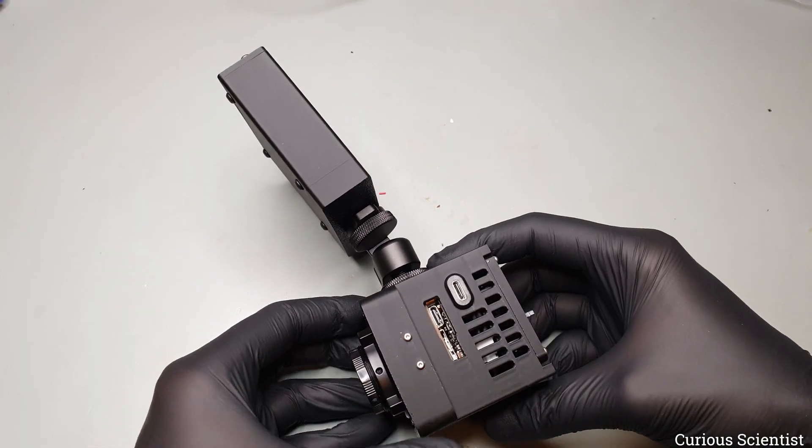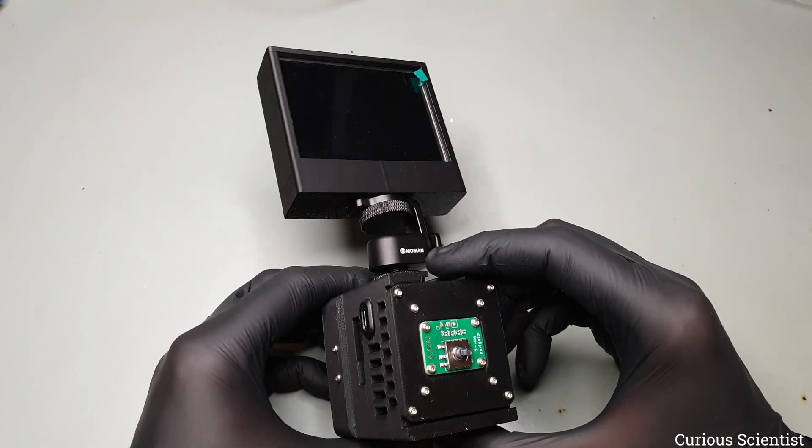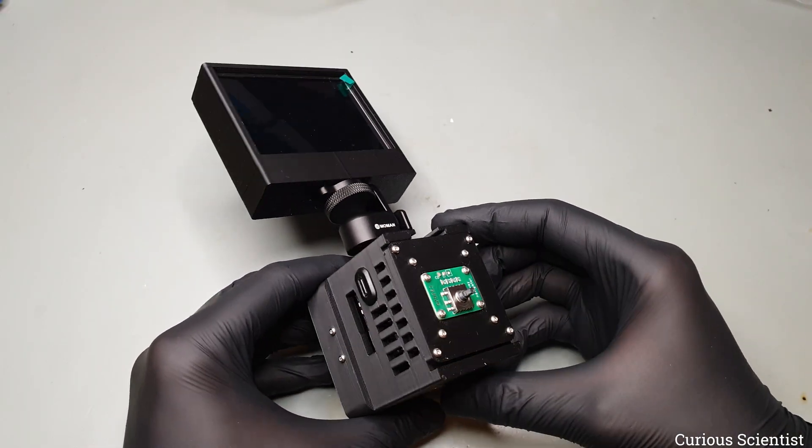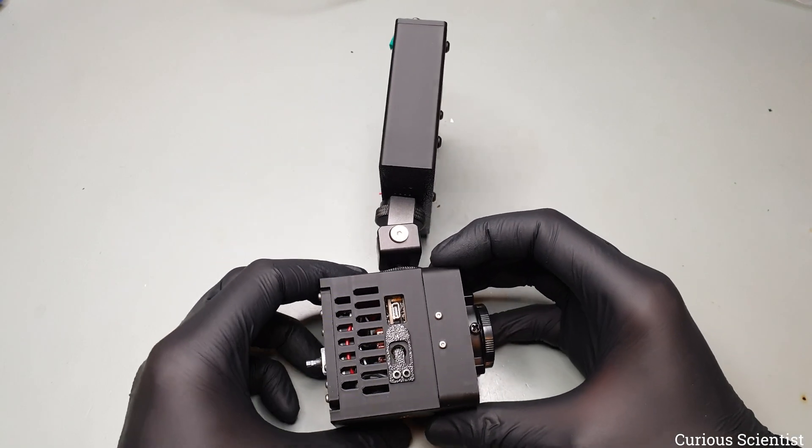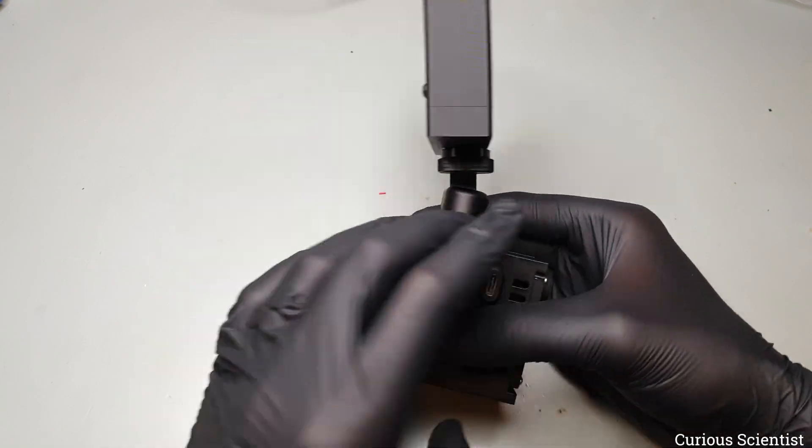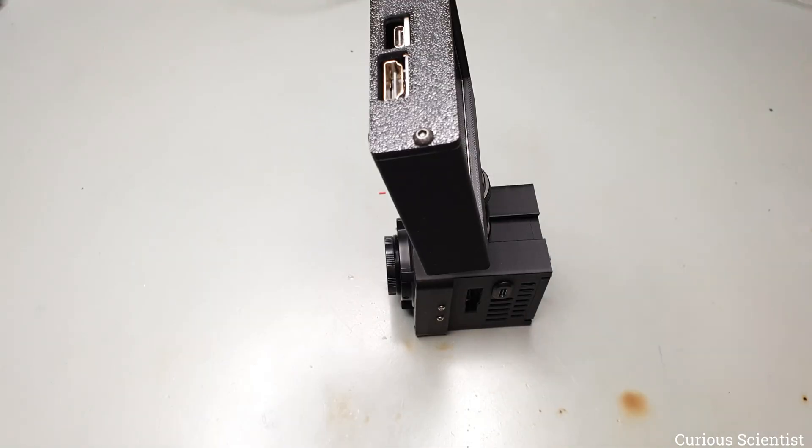The only downside of this specific display is that its aspect ratio is not exactly the same as the aspect ratio of the camera, so the displayed image is slightly squeezed along the horizontal axis. But it is not too bad, the camera is still usable.